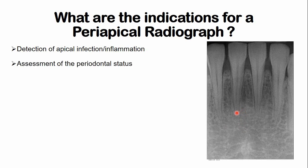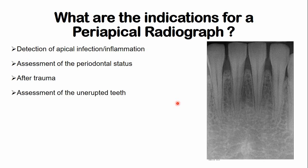Assessment of periodontal status — for example, you can detect the widening of the periodontal ligament space and bone loss. After trauma, the periapical radiograph is also indicated.